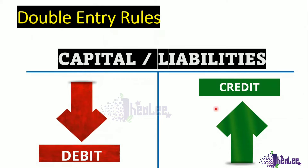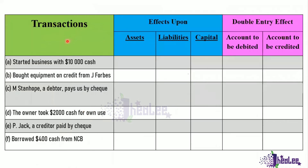Let us look at the application of the double entry rules. We have some transactions and we're going to identify the items affected, whether there is an increase or decrease, and then look at the double entry effect — which account is to be debited and which is to be credited. Transaction A: started business with $10,000 cash. The two items affected are cash and capital, because the owner is investing $10,000 cash into the business.